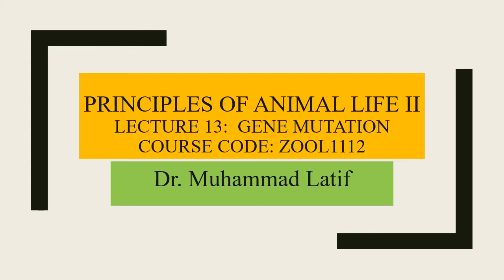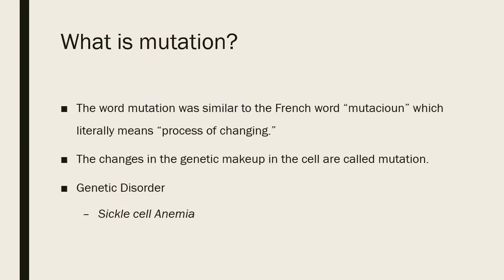What is mutation? Basically the word mutation was similar to the French word 'mutation' which literally means process of changes. So the changes in the genetic makeup in the cell are called mutation. A change in the genetic makeup will depict genetic disorder in an organism. One example of genetic disorder among humans is sickle cell anemia, in which only one amino acid changes, causing a disease affecting hemoglobin, which is an oxygen-carrying protein.